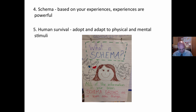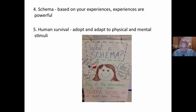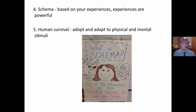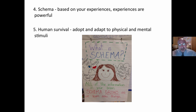Schema are based on your past experiences, and your personal experiences are powerful. Your schema, for example, based on reading instruction or learning or whatever, is based on your personal experience. This is why change is so often hard to occur in an educational context, because we have these personal experiences. These are schema based on our personal experiences. However, human survival is based on our ability to adopt and adapt schema.